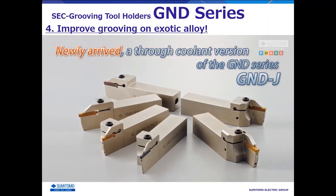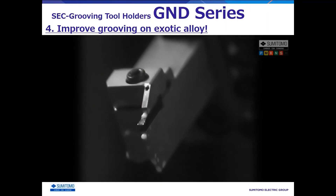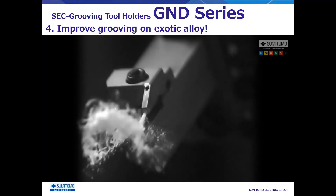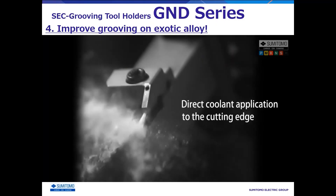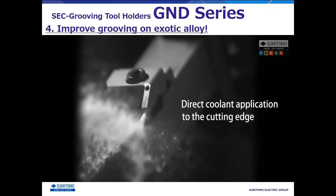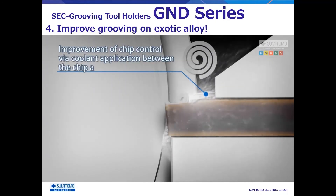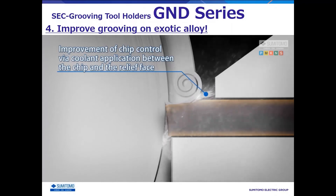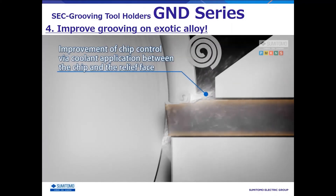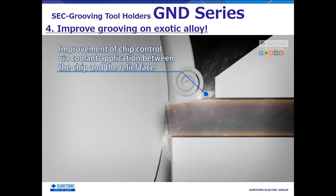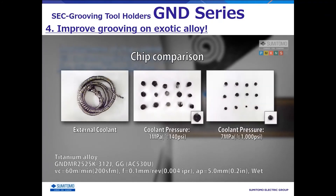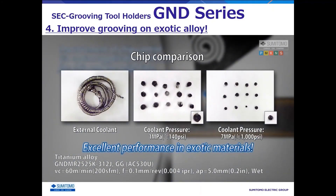In such cases, we have the GND-J type holder, which has two coolant holes — one on top and one on the bottom of the cutting edge. Internal coolant from the vicinity of the cutting edge rapidly cools chips and makes them brittle. In addition, coolant is applied between the chips and the rake face directly and promotes chip break. Compared to normal external coolant, chip control is improved even with 1MPa, a low pressure coolant, and its effect is significant with 7MPa, a high pressure coolant.